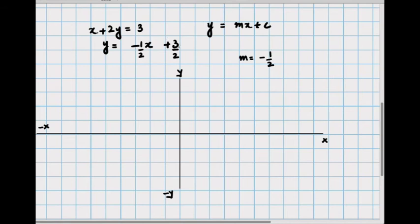But in this case, in order to make a start we first need to see where is this line going to cut the y-axis. And as you can tell it is 3 over 2, which is the value of c, or 1.5.